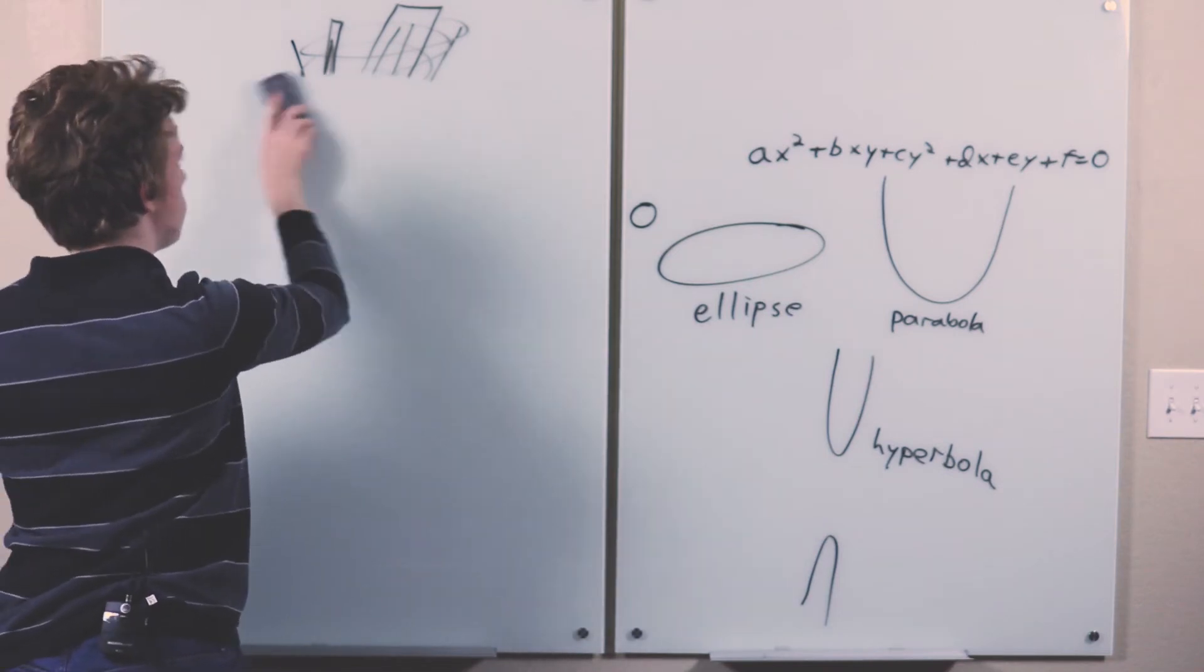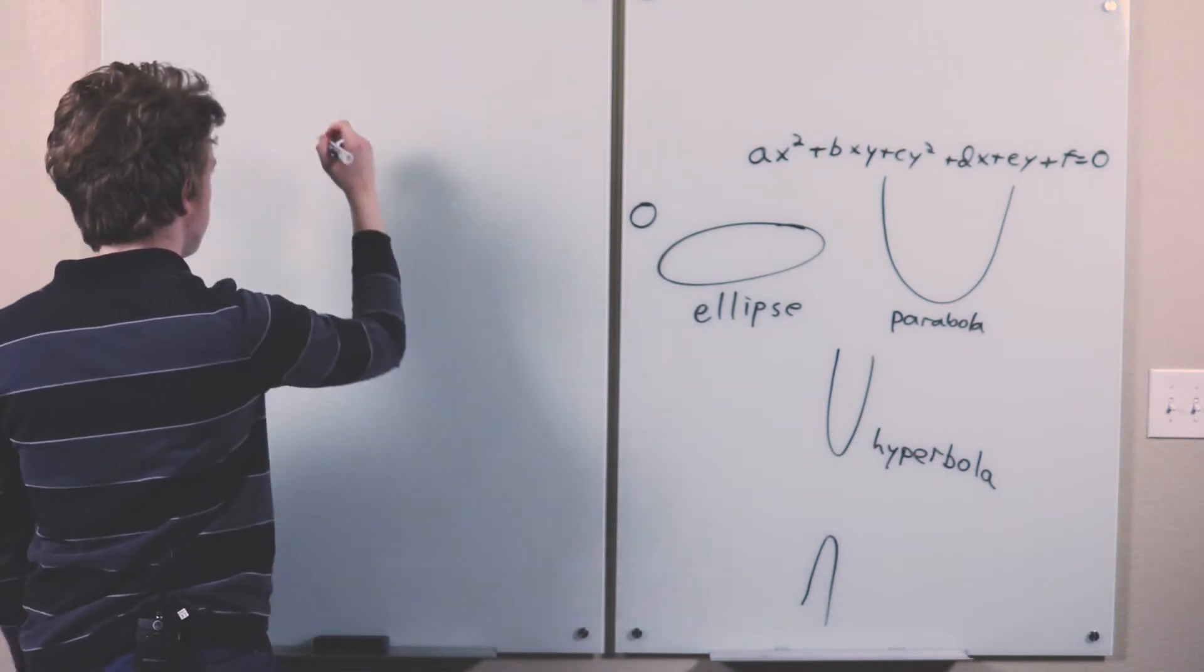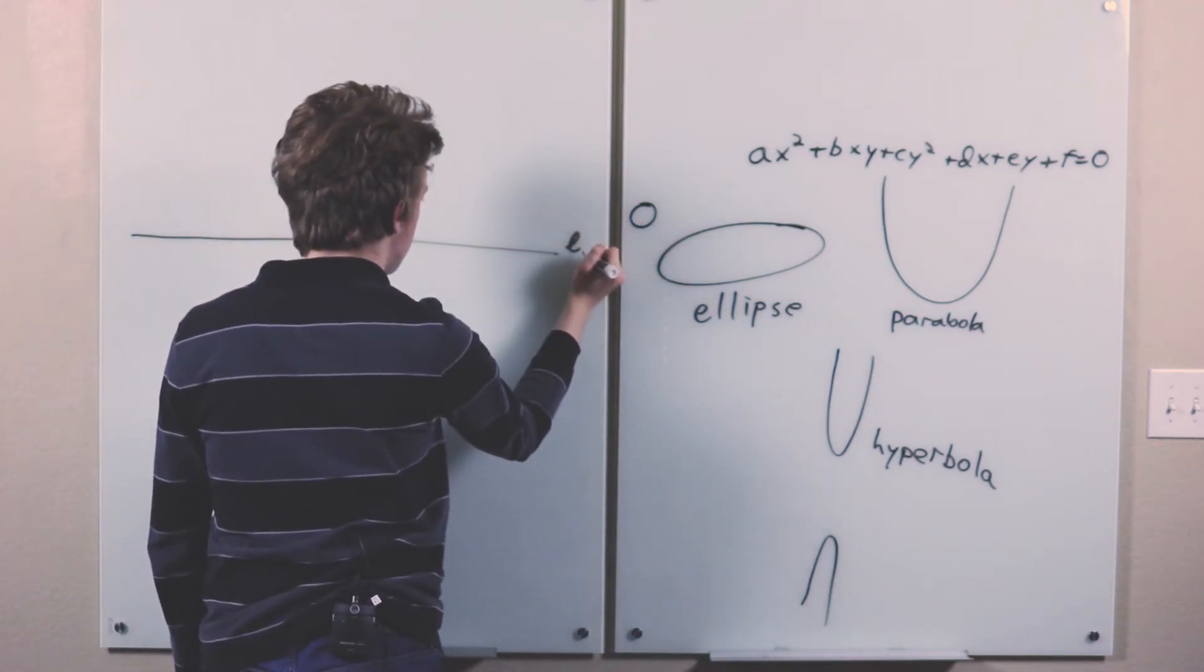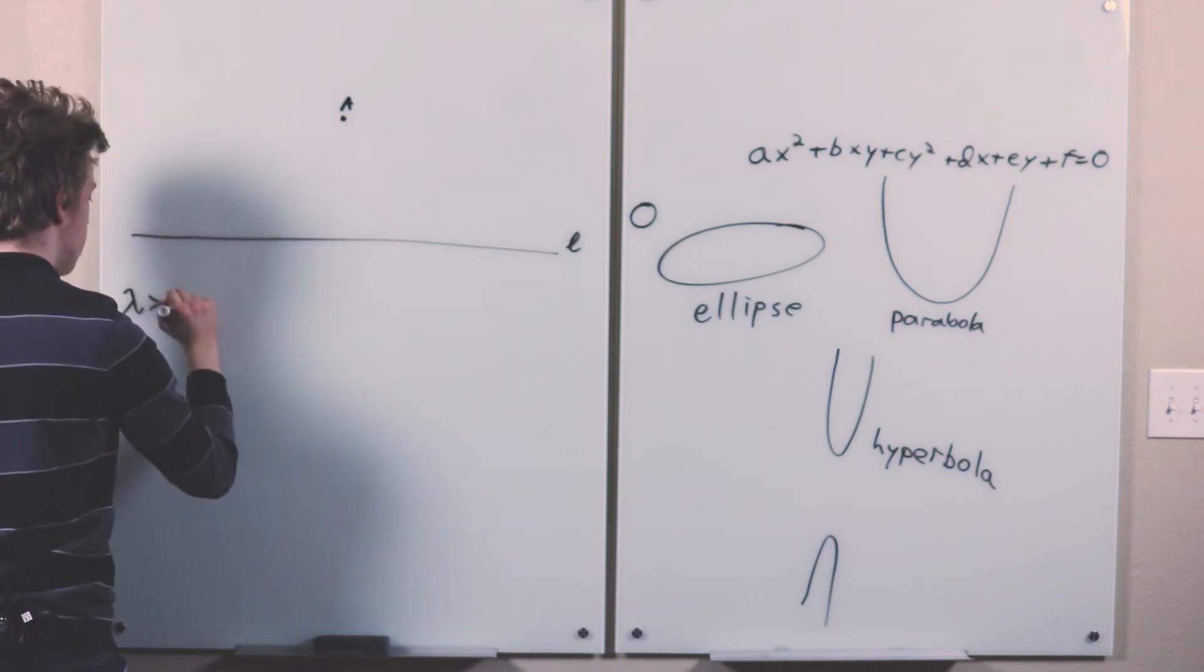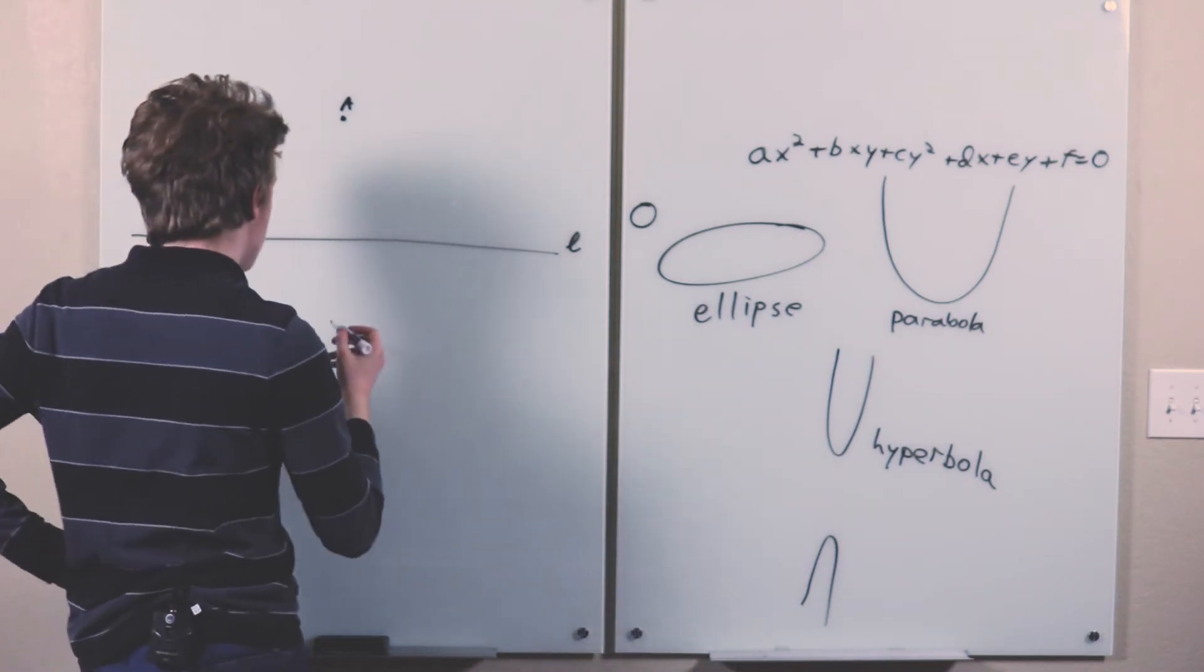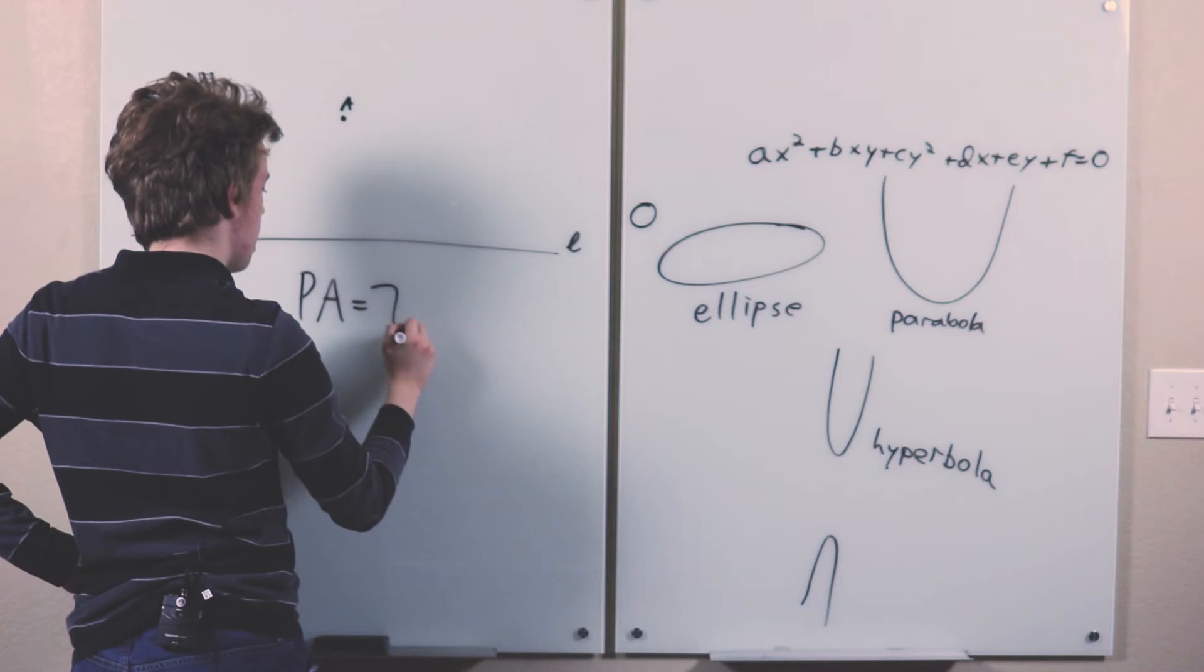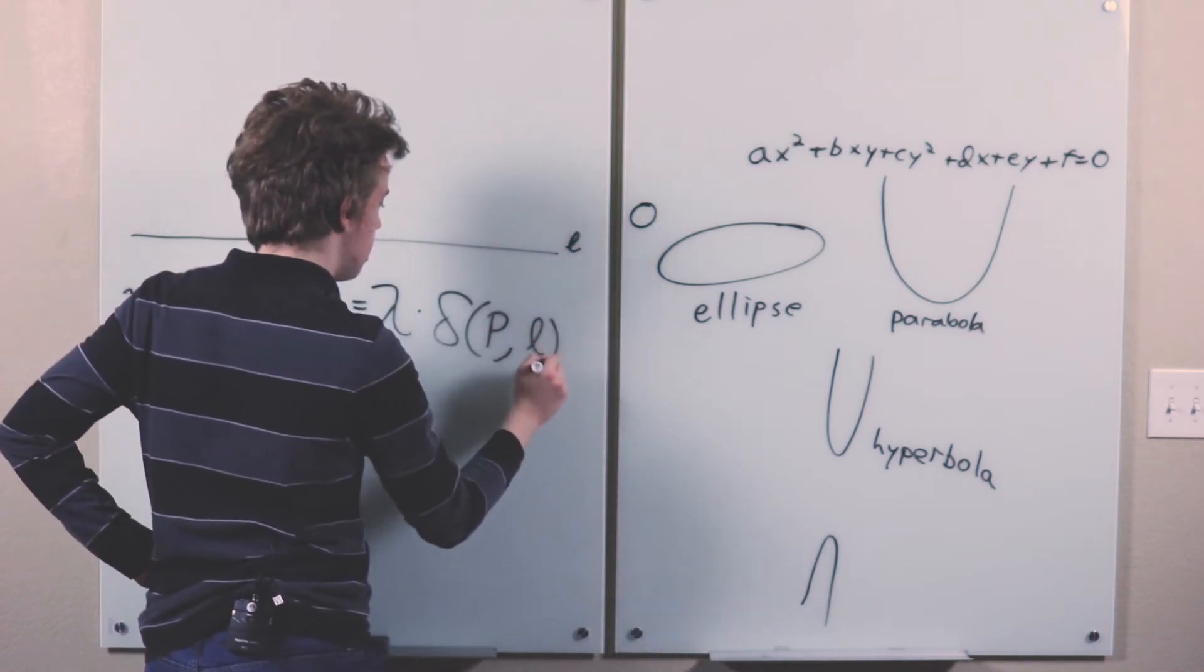Which is, if you take any point A in the plane, and any line L not passing through A, and then you also take any positive real number lambda, then you take a geometric locus of all the points P in this plane such that the distance from P to A is exactly lambda times the distance from P to L, denoted delta PL.